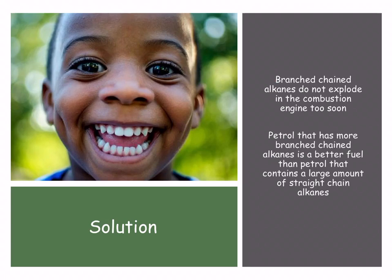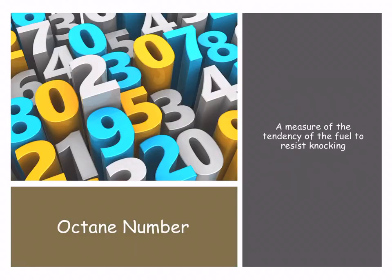What we do instead is use branched-chain hydrocarbons. We look at 2,2,4-trimethylpentane — take a moment, write it down and draw it out. We need petrol that has lots of different branched-chain alkanes because it's a much better fuel and it's much more efficient.